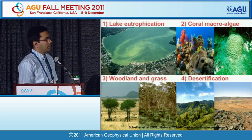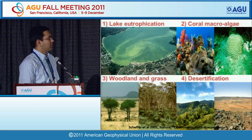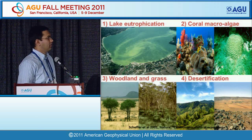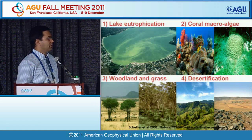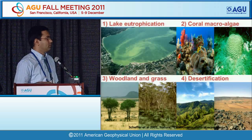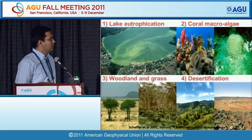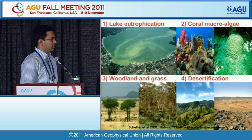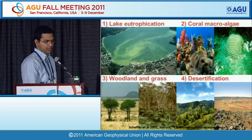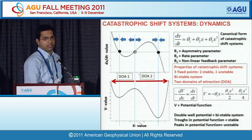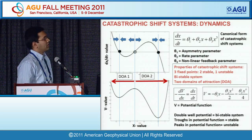Similar examples exist in woodland and grassland scenarios, where grasses are stabilized by fires and grazing, whereas woodlands are resistant to fire. Once you have a woodland, it's very tough to transition to grassland, and once you have a well-stabilized grassland, it's difficult to go back to woodland. These are examples from real-life scenarios that talk about resilience in the context of catastrophic shift systems. Now let's look at the dynamics and the equations that govern this.